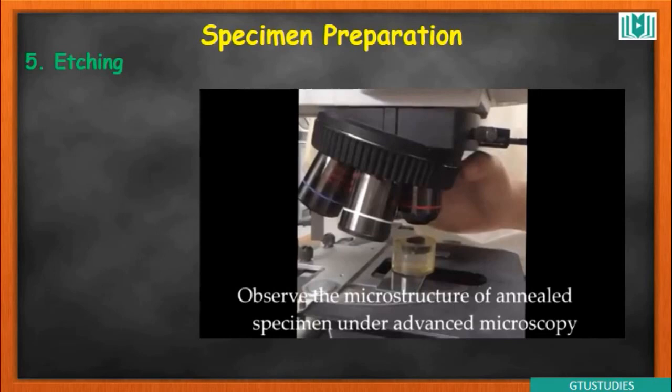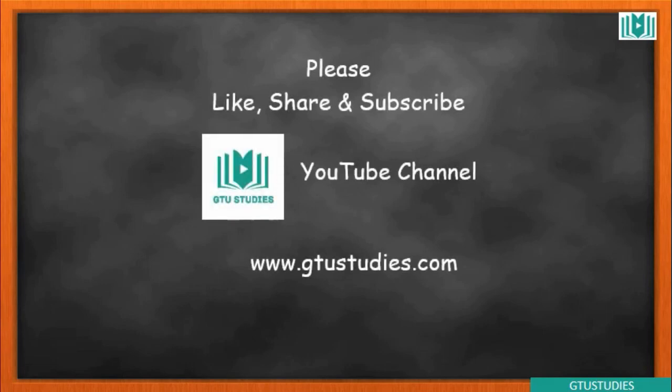The etching highlights the structure and properties, including defects, which can then be studied under the microscope. In summary, specimen preparation involves five steps: sectioning — cut to proper size; mounting — hold the sample; grinding — third step; polishing — fourth step; and etching — fifth step. Like, share, and subscribe to the GTU Studies channel, and visit our website at www.gtustudies.com. Thank you.